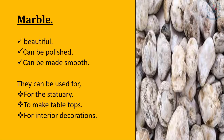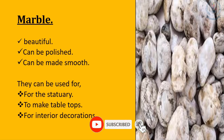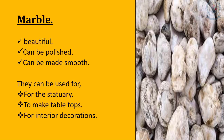The next type of rock is marble. As you can see in this picture, marble is beautiful and can be polished and made smooth. These are the characteristics of marble. Marble can be used for statuary, to make tabletops, and for interior decorations.